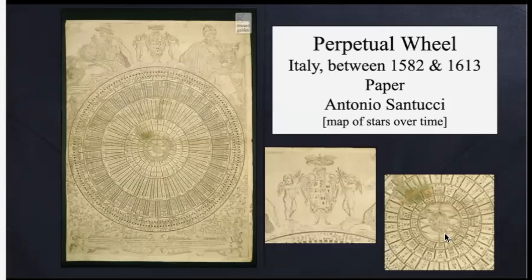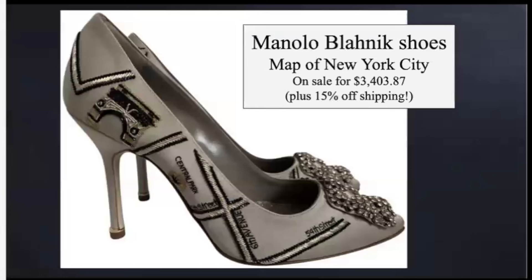You can see up here there are two male figures with compasses measuring stellar and physical distances on a celestial and a terrestrial globe. This is a pair of shoes by Manolo Blahnik — and if I'm mispronouncing that, please do let me know — and they have on them a map of New York City. Chances are not good that you would be able to find yourself in New York City by using these as a map. So what purpose does the map serve? You might think about New York City as a locus of money, fashion, and social power. This particular pair was marked down when I found it from over $4,000 to a mere $3,403.87, plus 15% off shipping.